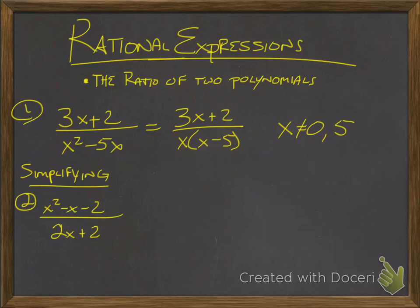Okay, so if I'm simplifying a rational expression, all I'm going to do is factor both numerator and denominator. So this numerator here factors into x minus two times x plus one, and the denominator of two can factor out, and I'm left with two times parentheses x plus one. After that, you're looking at what can cancel out, so my x plus ones can cancel out.